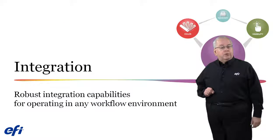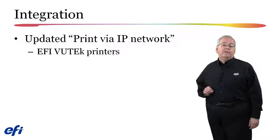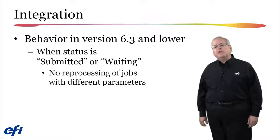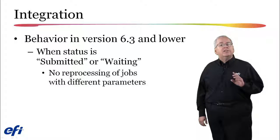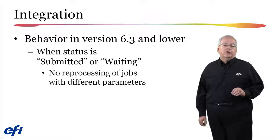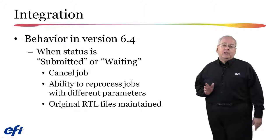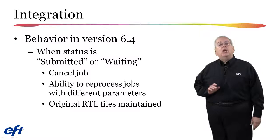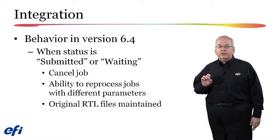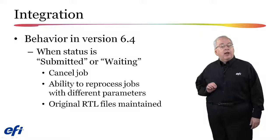Let's explore the integration improvements added to version 6.4. Print via IP network has been updated for all EFI ViewTech printers. In version 6.3 and lower, when jobs were sent via IP to the ViewTech printer with status submitted or waiting, it was not possible to reprocess the job with different parameters, such as a different color mode or resolution. Now in version 6.4, you will be able to cancel the job — which cancels bidirectional communication but leaves the RTL file in the ViewTech printer software queue — change parameters, and send another or multiple versions of the same job. The bidirectional communication for the prior job sent will be maintained.